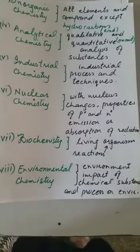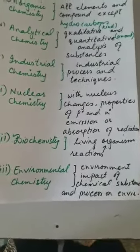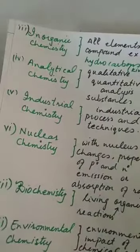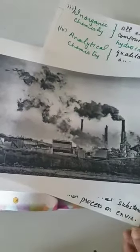The last branch of chemistry is environmental chemistry. As the word indicates, it is the study of the environment. We know that we are facing some types of environmental problems in our daily life. Environmental chemistry is the study of all these chemical processes, their bad impact on the environment, and how we can control such things in the environment to protect our life.